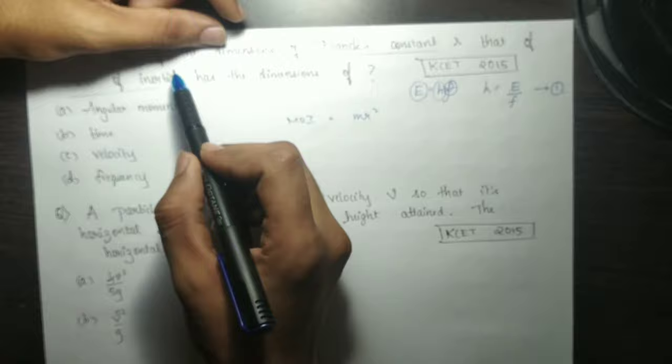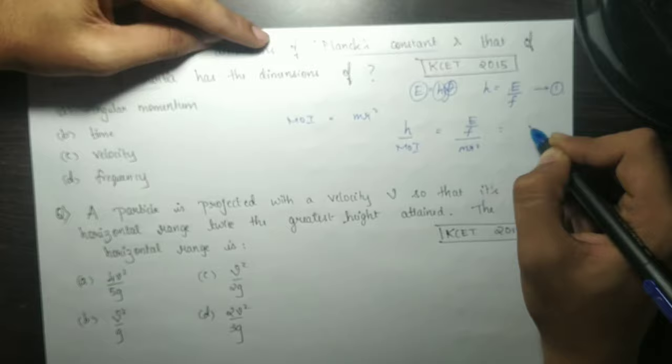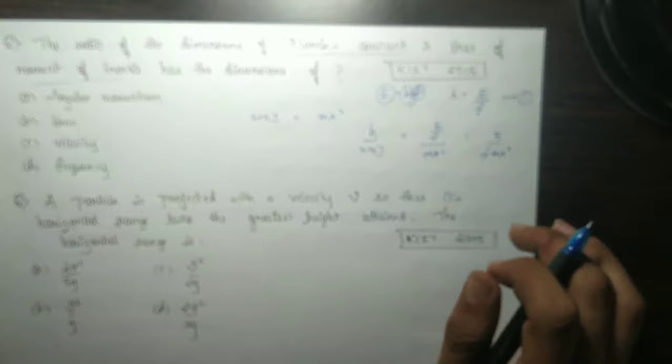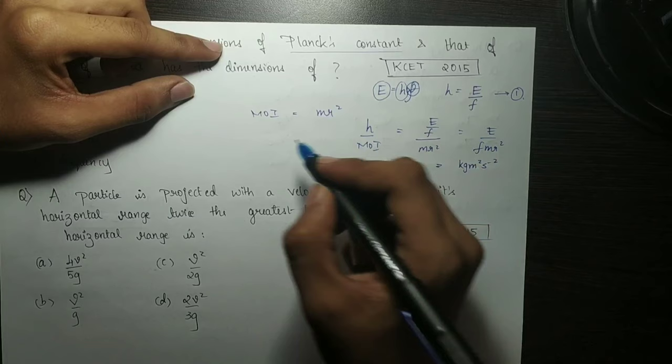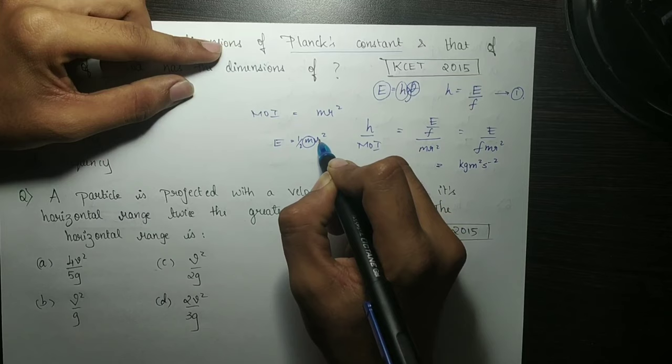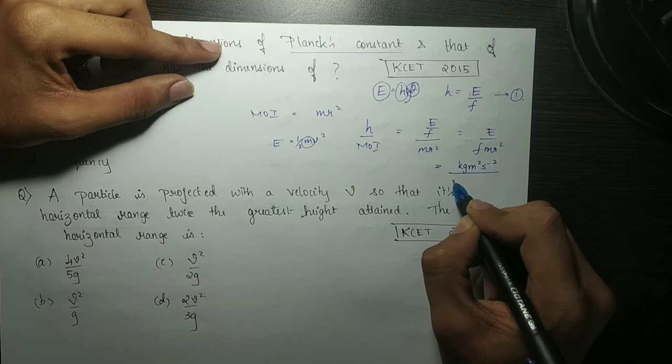So the ratio of the dimensions of Planck's constant to that of moment of inertia, so H by moment of inertia. H is E by F divided by mR squared, so E by F mR squared. This is, we have to do dimensional analysis. We have to focus on, so E energy is kg m squared per second squared.